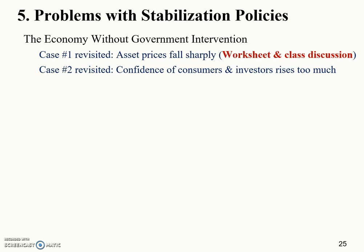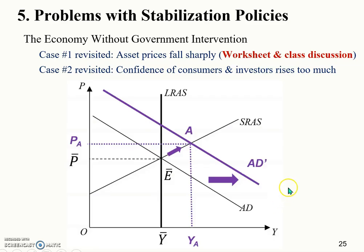Case number two: the confidence of consumers and investors rises too much. They become very optimistic — probably over-optimistic — about the future of the economy, so they spend too much in consumption and investment. As we discussed, this overconfidence causes a rightward shift of the aggregate demand curve. The economy ends up with expansion and inflation — producing more than its potential level, with a higher overall price level.